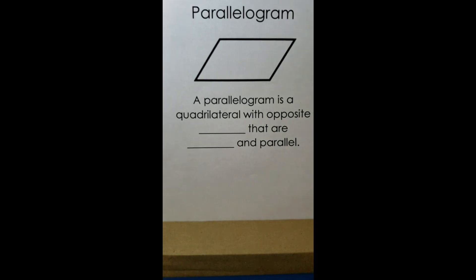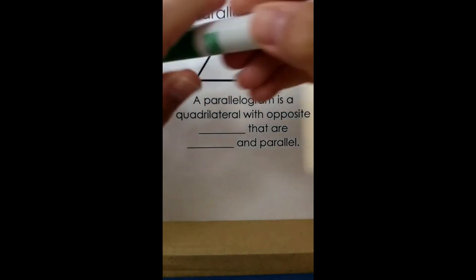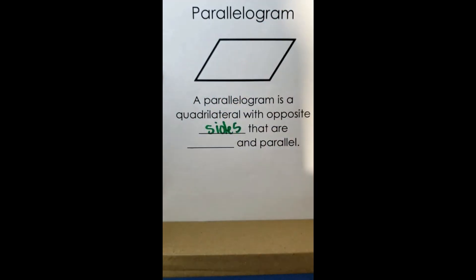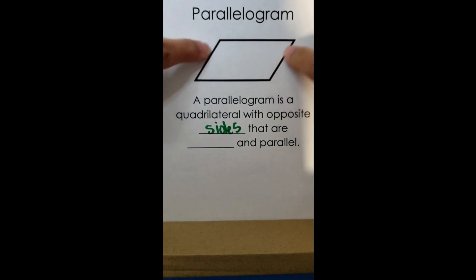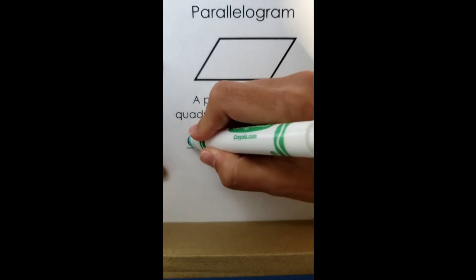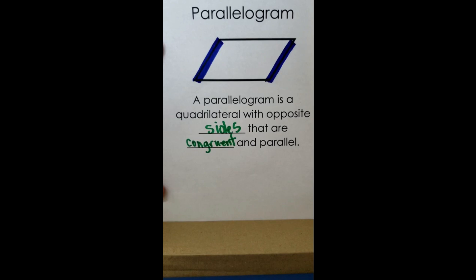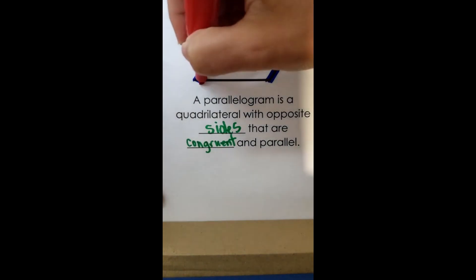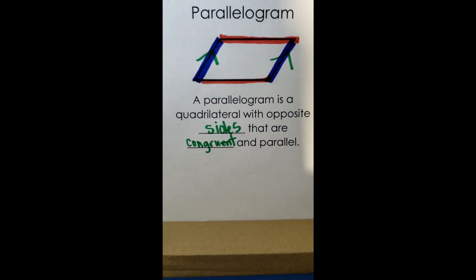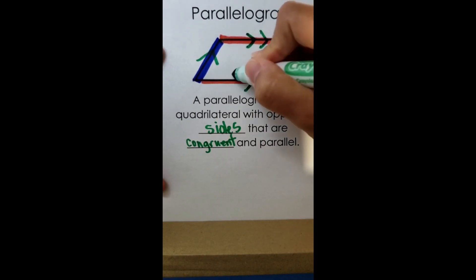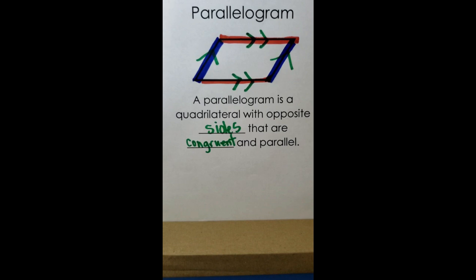A parallelogram is a quadrilateral with opposite sides that are congruent and parallel. Looking at the shape, this side and the opposite side are equal in length and parallel to each other. The top and bottom are also congruent and parallel. So the parallelogram actually has two pairs of parallel sides.